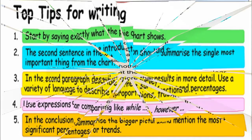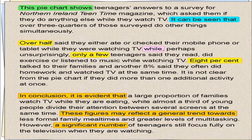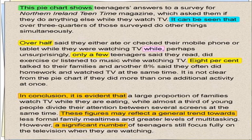Let's try to write it down: 'This pie chart shows teenagers' answers to a survey for Northern Ireland Teen Time Magazine which asked them if they do anything else while they watch TV. It can be seen that over three quarters of those surveyed do other things simultaneously. Over half said they either ate or checked their mobile phone or tablet while they were watching TV, while perhaps surprisingly only a few teenagers said they read, did exercise, or listened to music while watching TV. Eight percent talked to their families and another 8% said they often did homework and watched TV at the same time. It is not clear from the pie chart if they did more than one additional activity at once.'